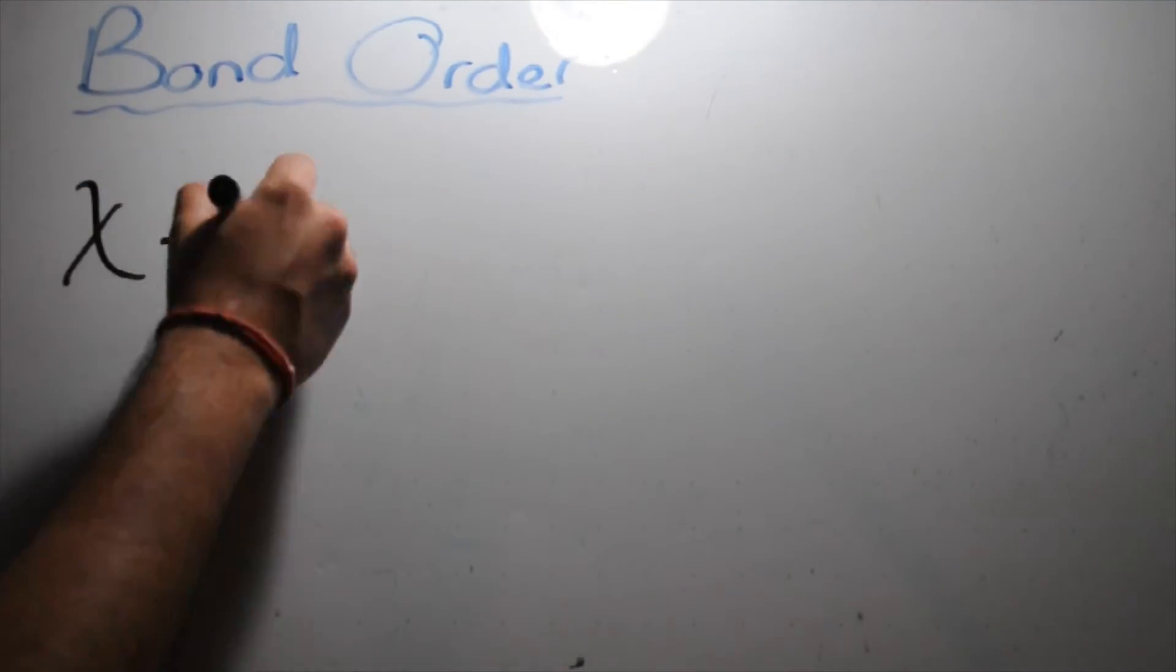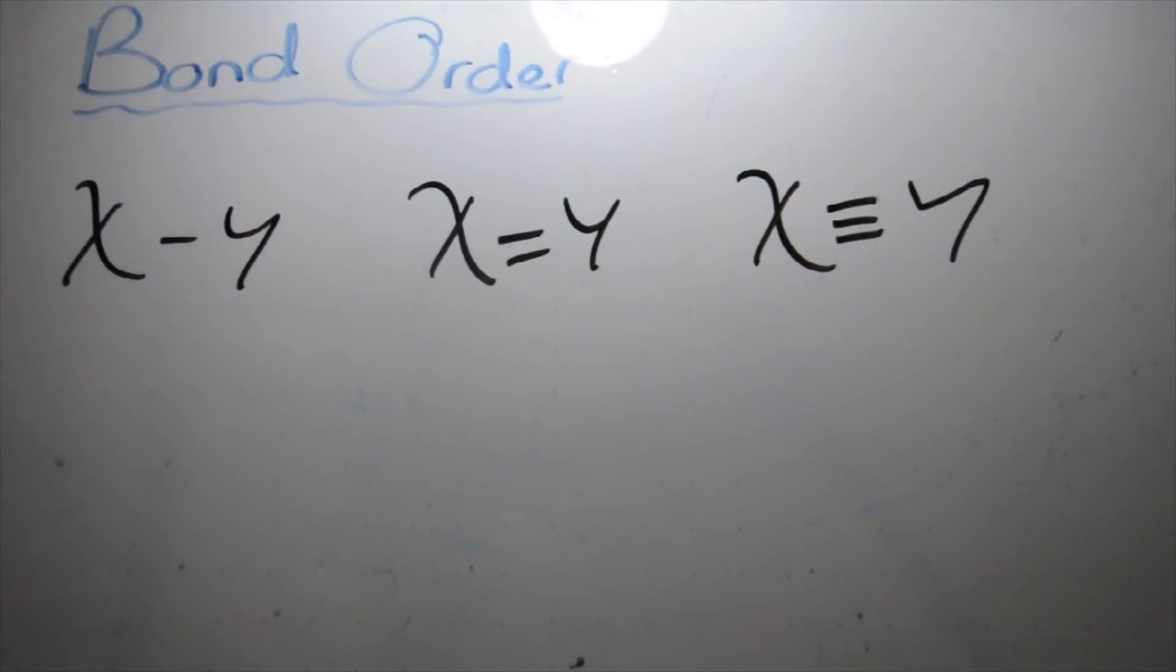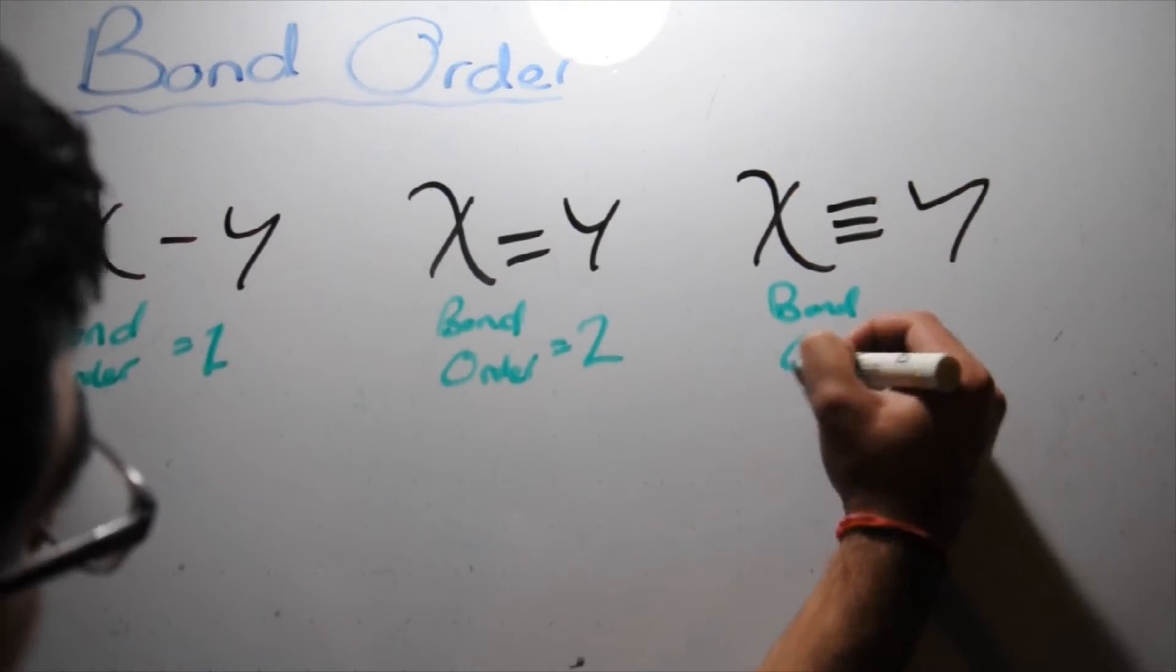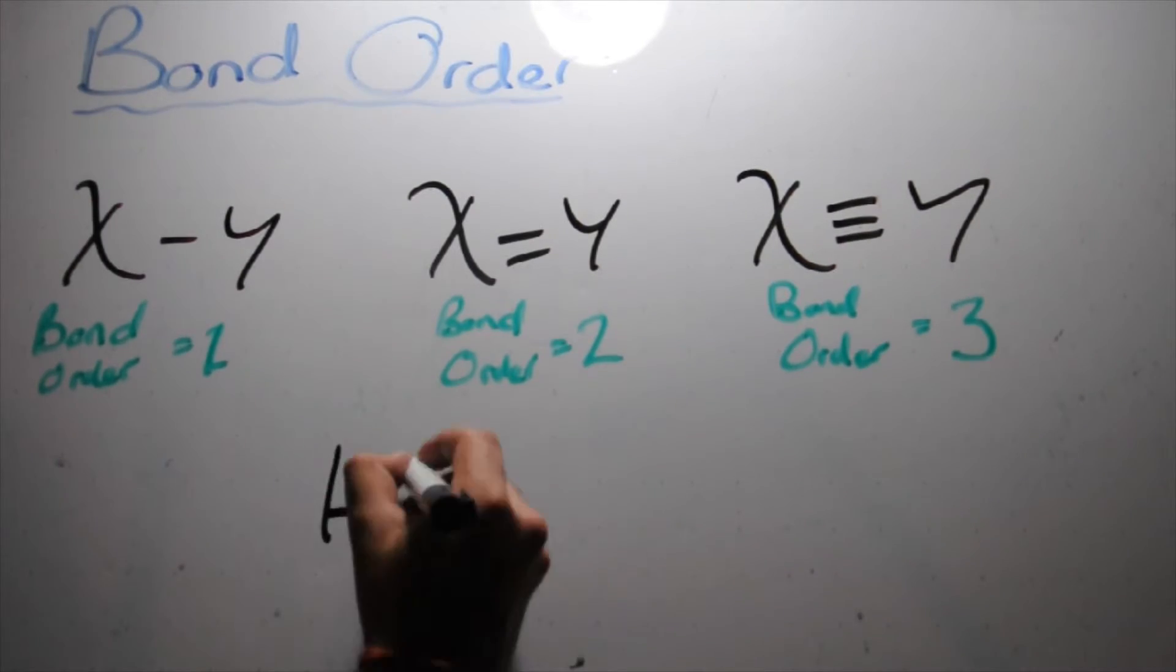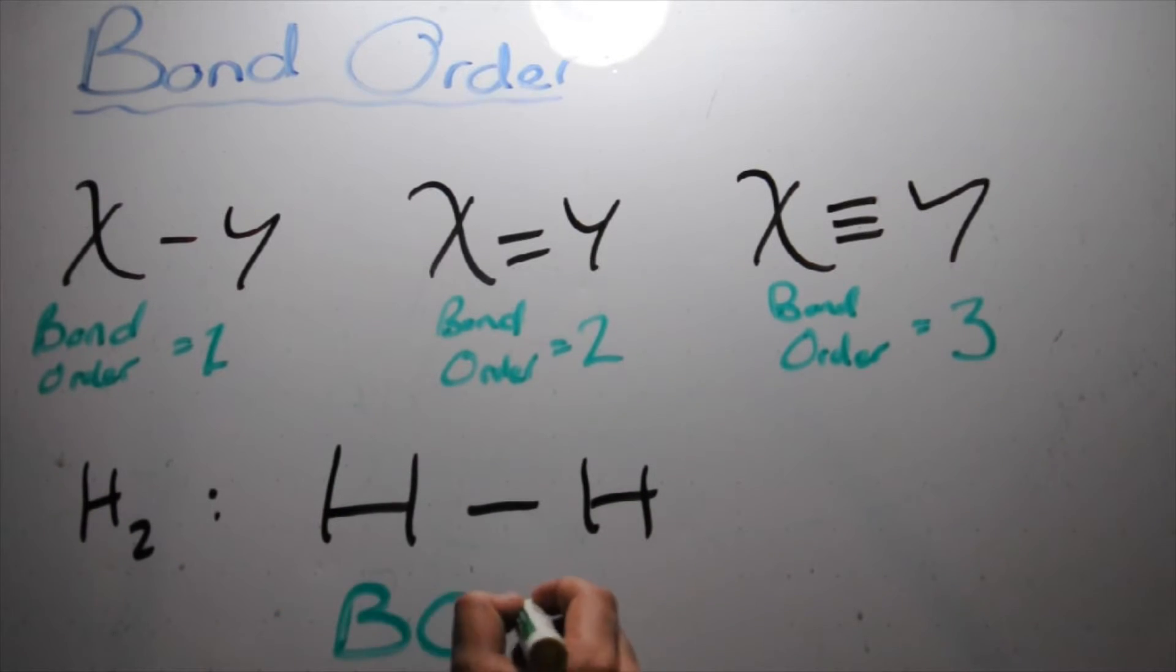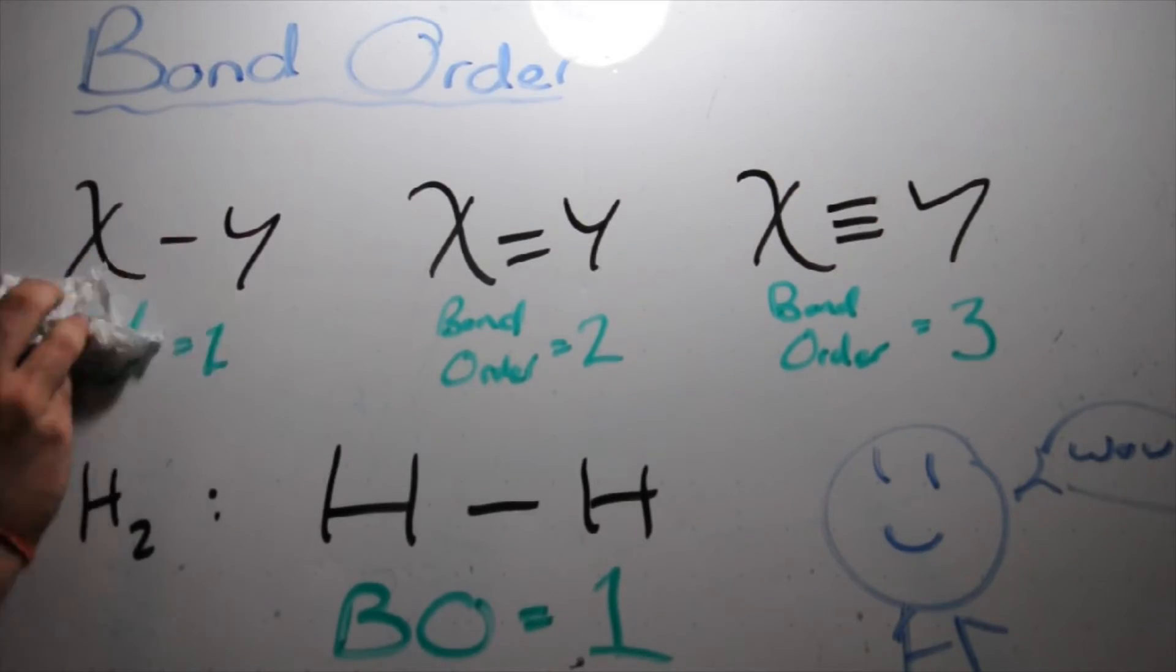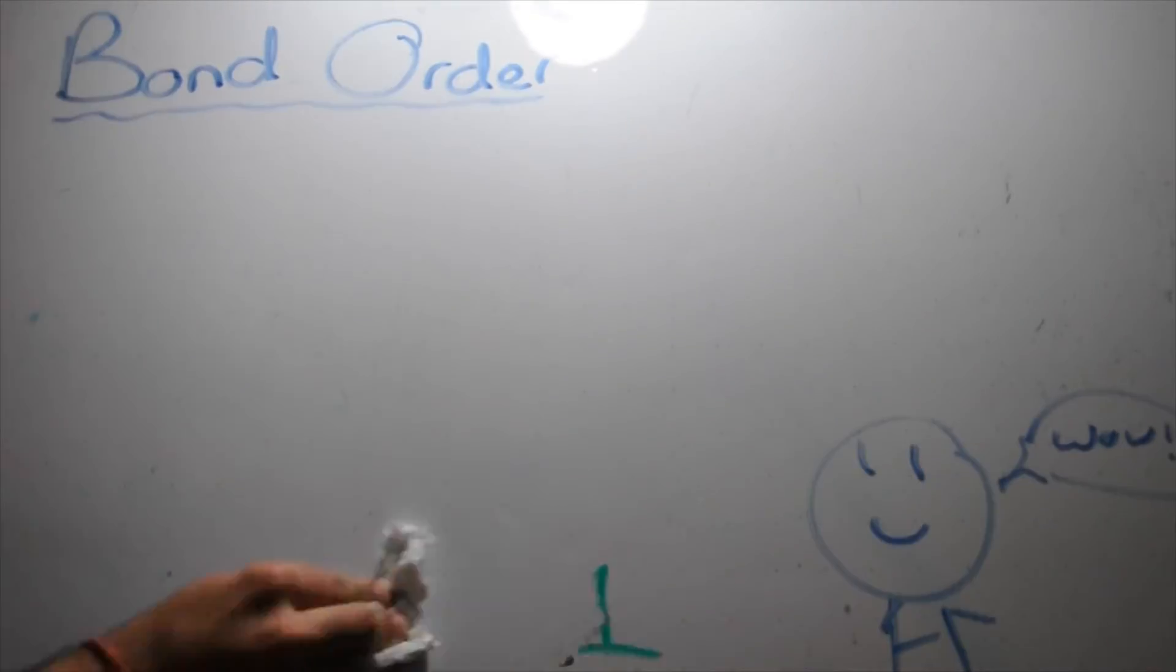Now, let's talk about bond order. Bond order is the number of bonding pairs of electrons between two atoms. A single bond has a bond order of 1, a double bond has a bond order of 2, and a triple bond has a bond order of 3, and so on. So, for example, H2 has a single bond between the two H's. Therefore, the bond order is said to be 1.